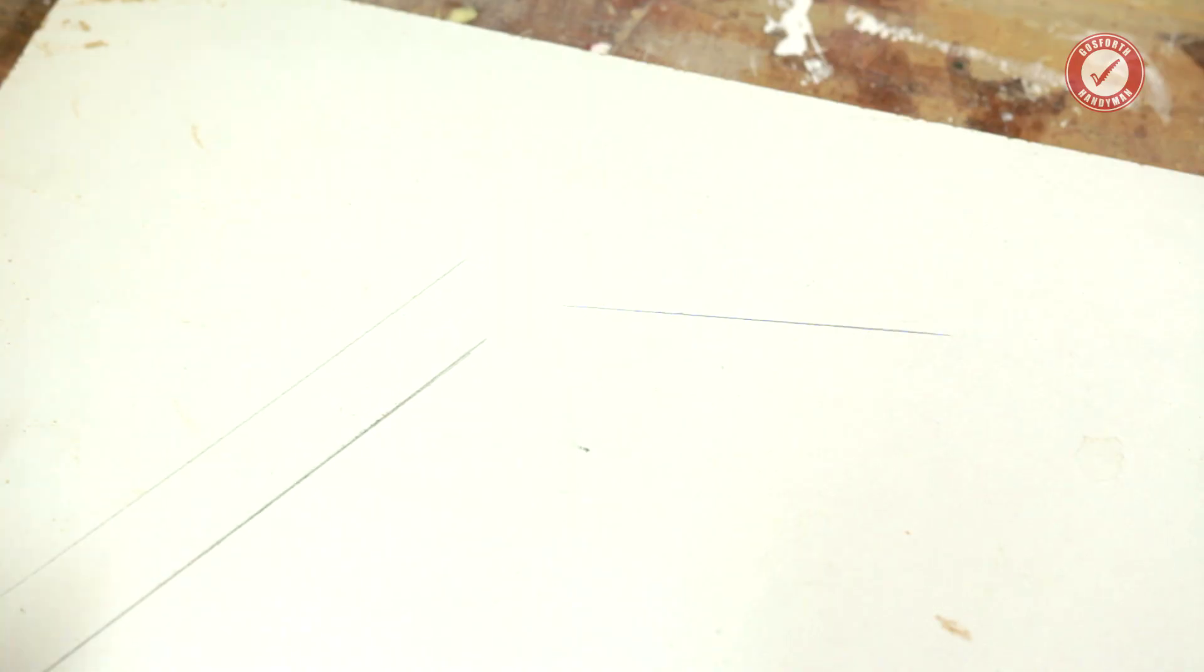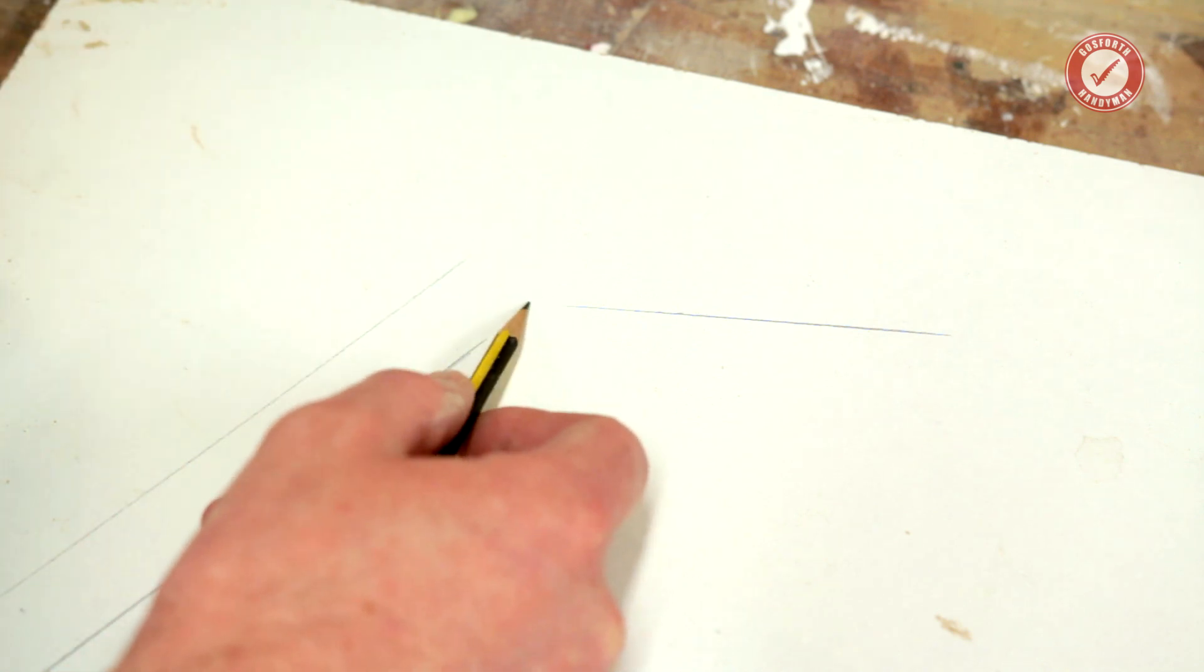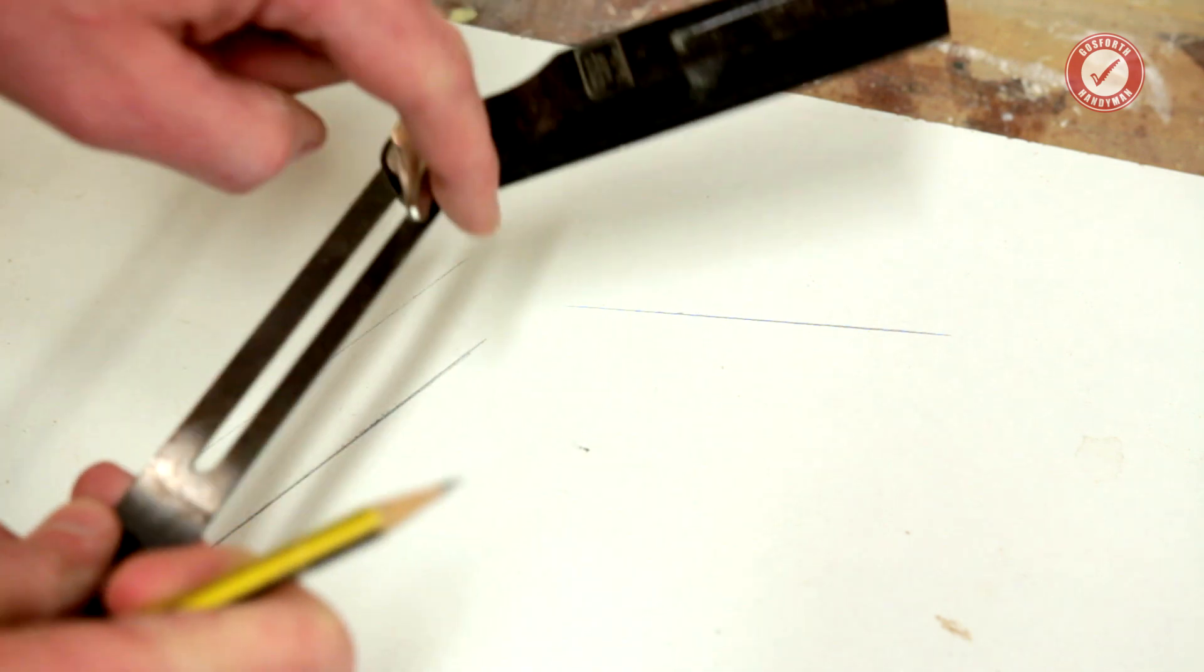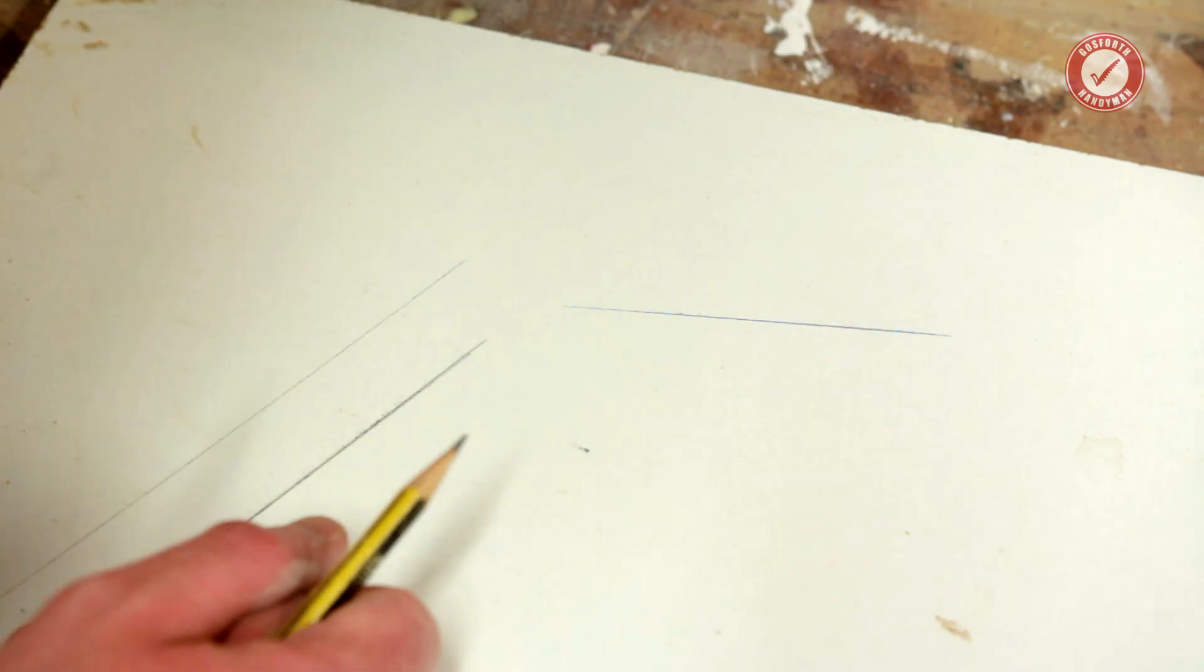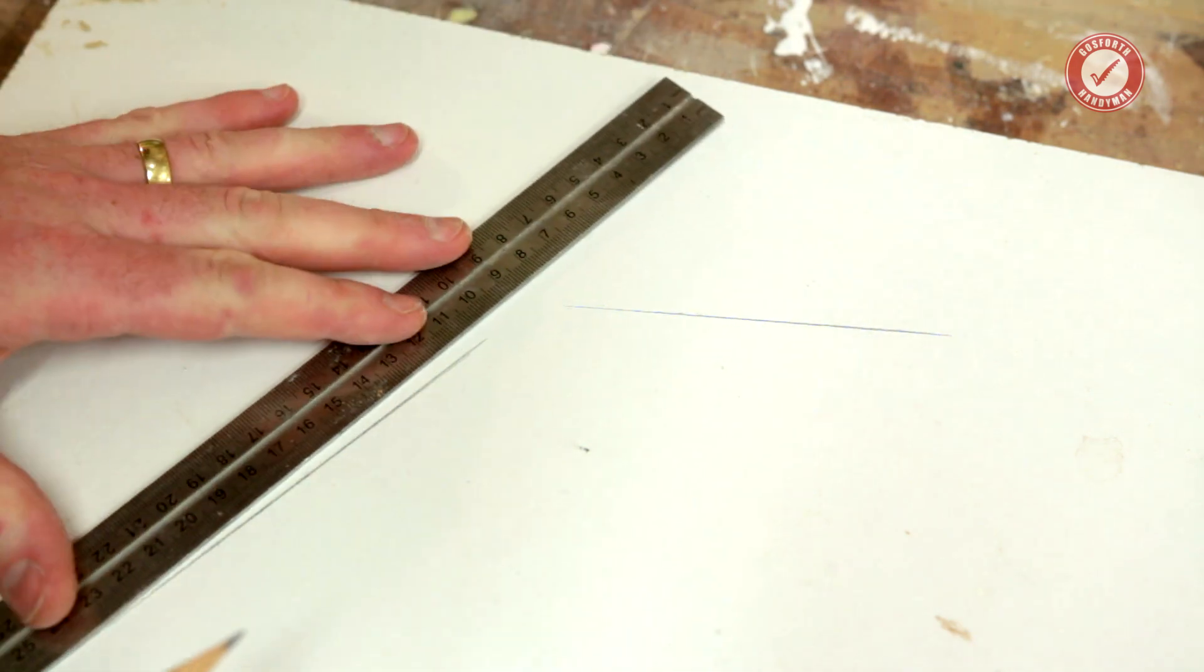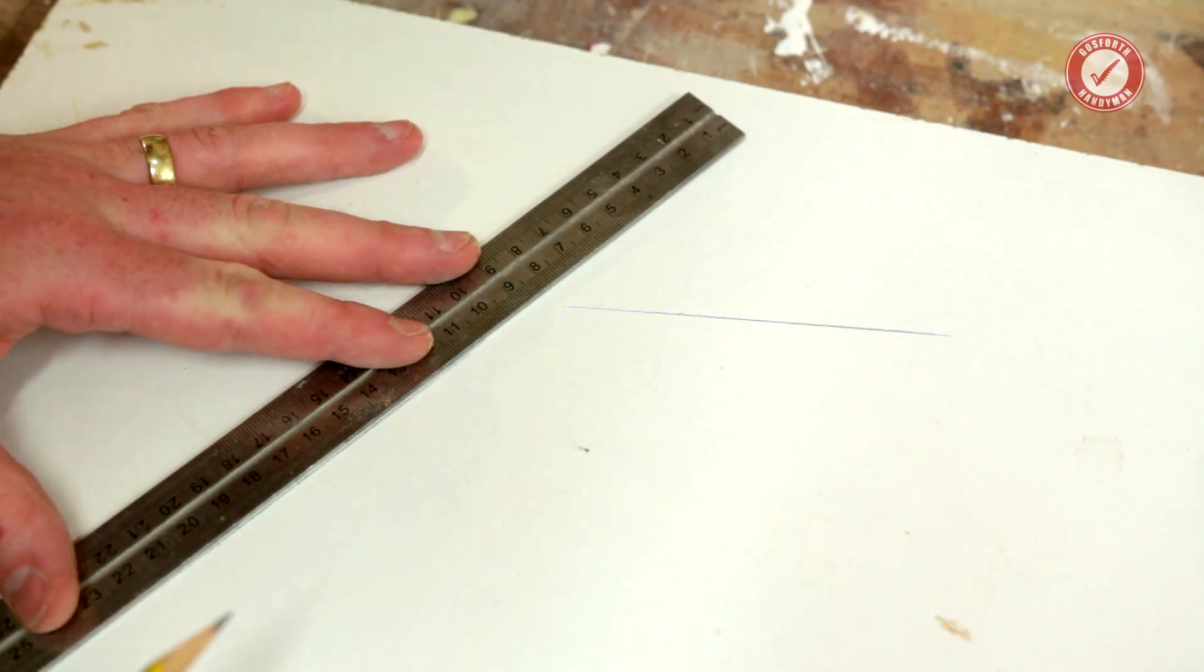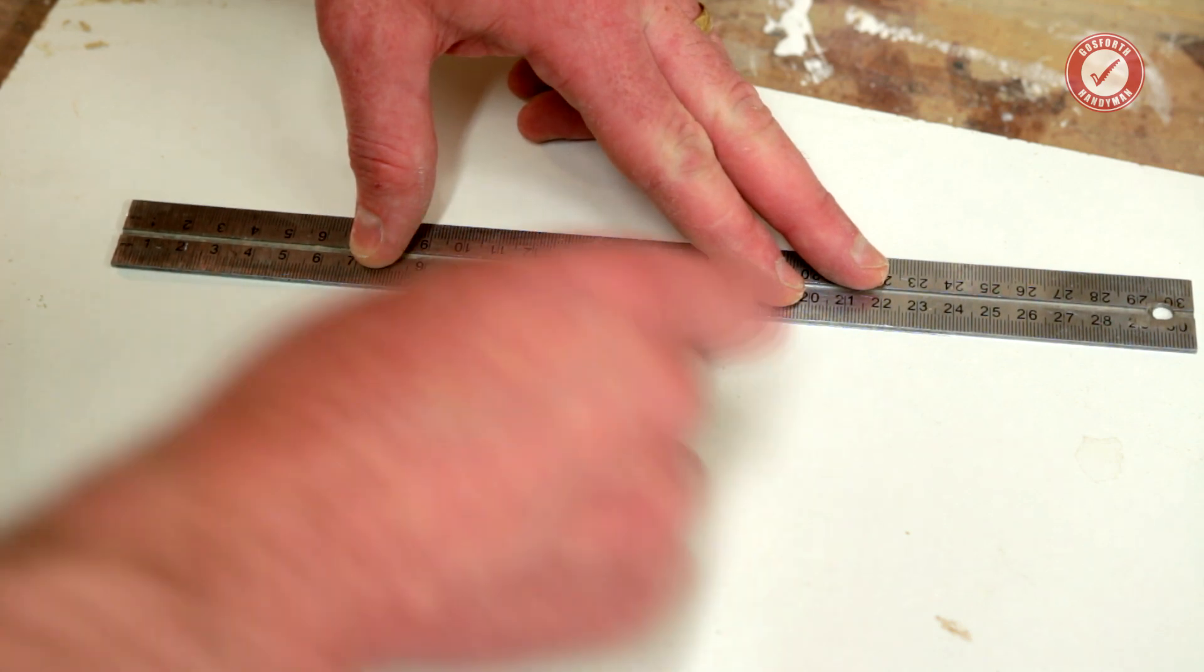The key thing here is that we need to get this intersection point, which I can't get through because we've got the nut in the way. I'm just going to grab a ruler and continue these lines along. This is one of these jobs that when you're doing it in real life takes less than 30 seconds, but because I'm trying to explain it, it's going to take a bit longer.